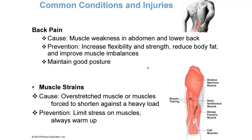Back pain affects 80% of U.S. citizens at some point in their lifetime. It's often caused by muscle weakness in the abdomen and lower back or improper lifting techniques. Prevention includes maintaining good posture when lifting, increasing flexibility and strength, reducing body fat especially in the abdominal area, and correcting muscle imbalances — for example, if you work your core but neglect your back muscles, you create an imbalance.